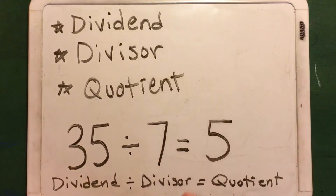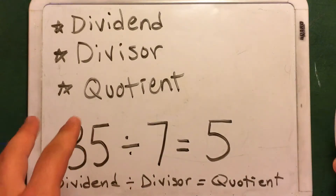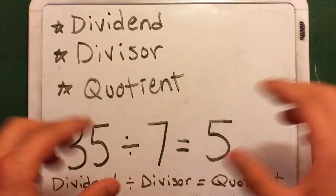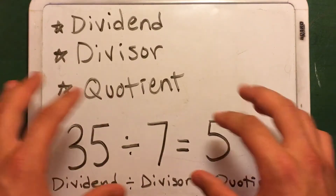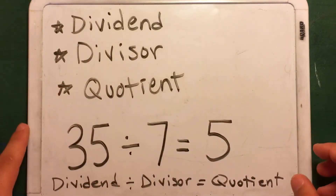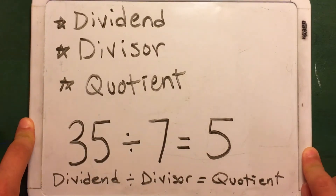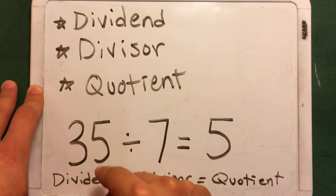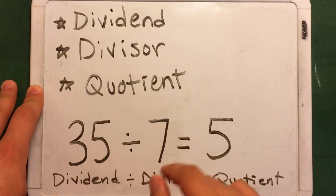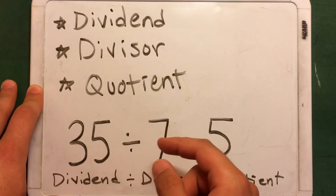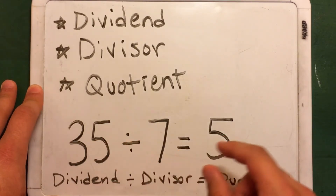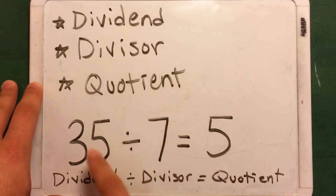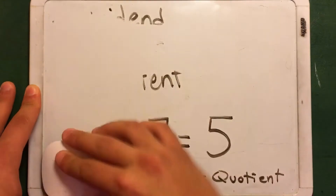In this video, I'm going to show you what the dividend, divisor, and quotient are. Basically, the dividend is the number that's going to be divided by a number. The divisor is what you're dividing by. And the quotient is your answer.